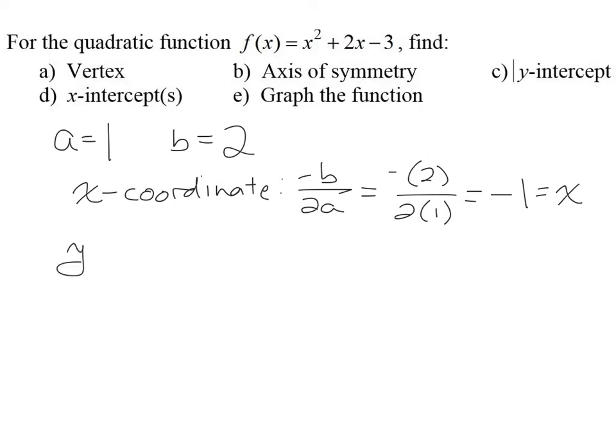To find the y-coordinate, you simply take the answer that you found for x, and you want to put it right into the function that we're given. So we want to find f of negative 1, and when you substitute negative 1 in for all of the x's in this equation, you will get that the y value is negative 4. So putting it all together, the vertex of this particular parabola is negative 1 comma negative 4.